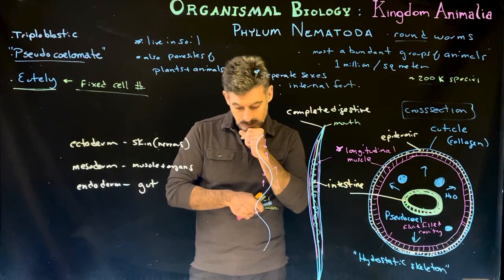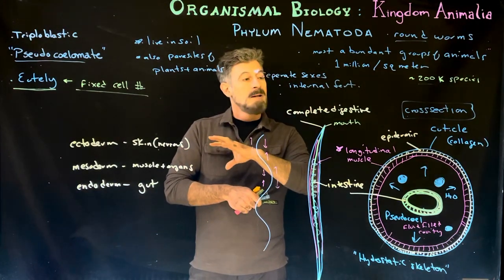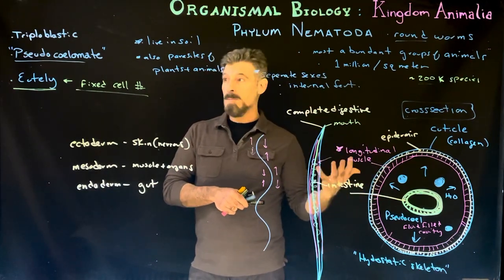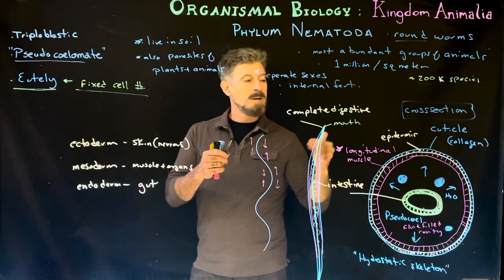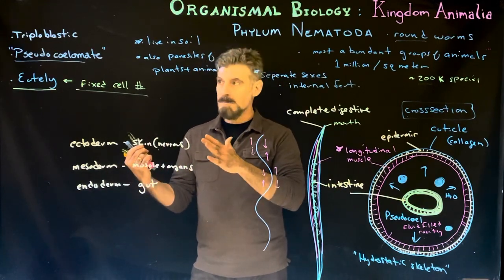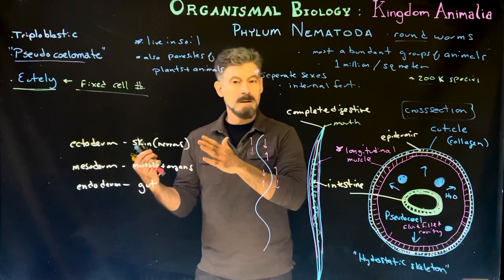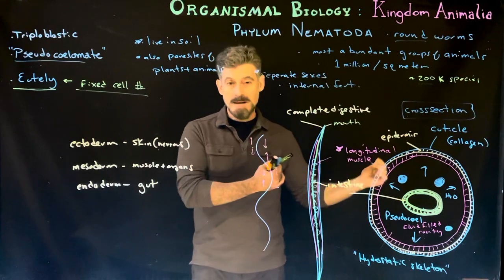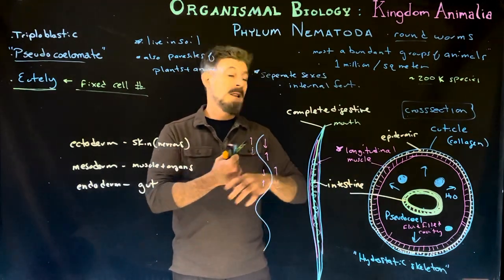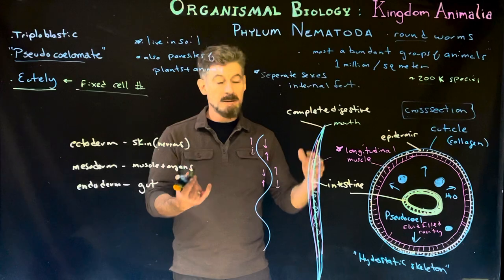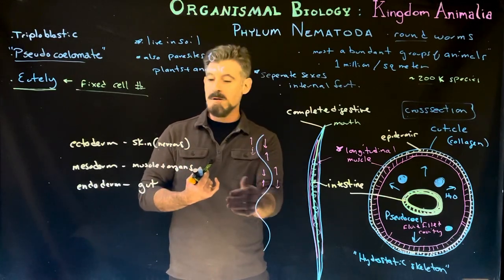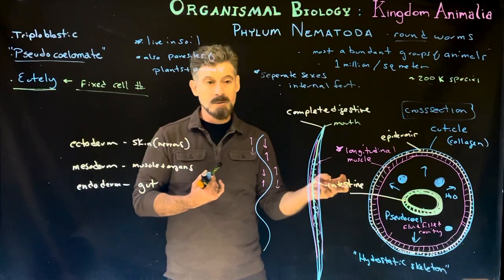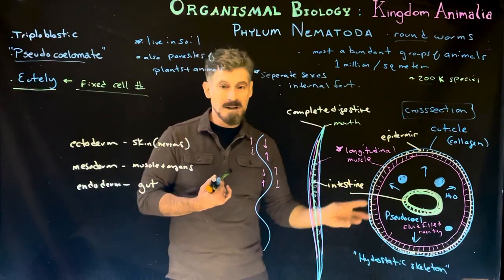Most other organisms do not have that — there's no fixed cell number, they can continue to divide, make more cells, cells die and more are made. This characteristic, eutely, is unique to this group. In some ways this group is somewhat simplistic but also very important, as it's kind of an in-between of the more basic diploblastic organisms or organisms without body cavities and the next groups, which will have a lot more complexity derived from the mesoderm.